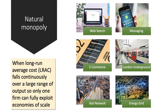N — natural monopoly. We have a separate video on natural monopoly, which is a really important aspect of monopoly to revise. Natural monopoly effectively is when long run average cost, LRAC, always falls over a very large range of output. So effectively in the industry there's probably room for only one firm to fully exploit the economies of scale and get close to minimum efficient scale. We typically associate natural monopoly with the big utilities such as the rail network, energy grids and London Underground.